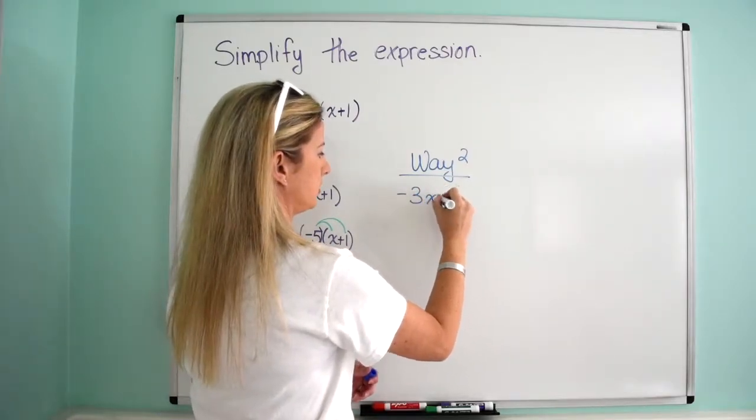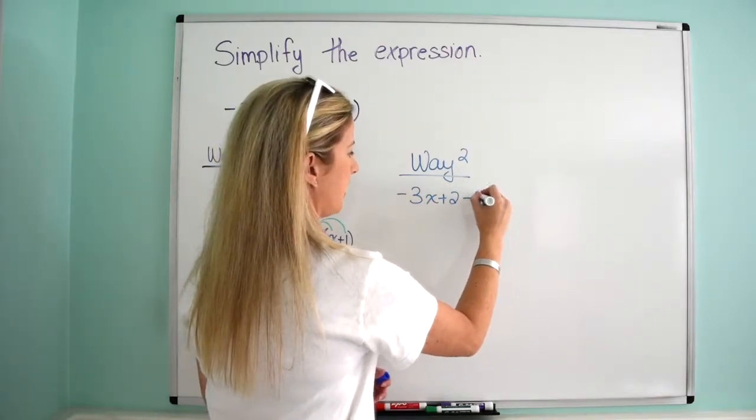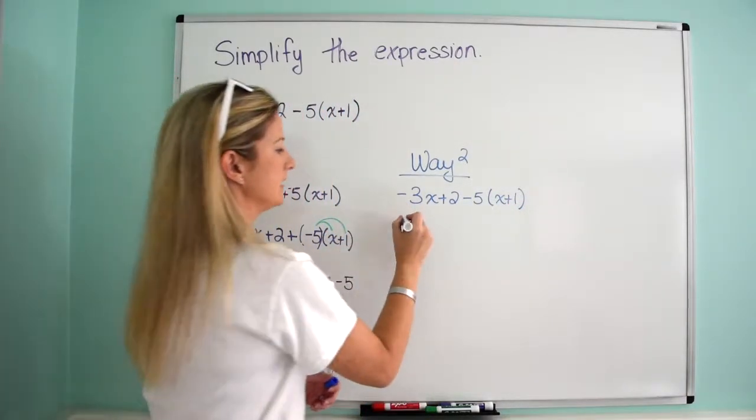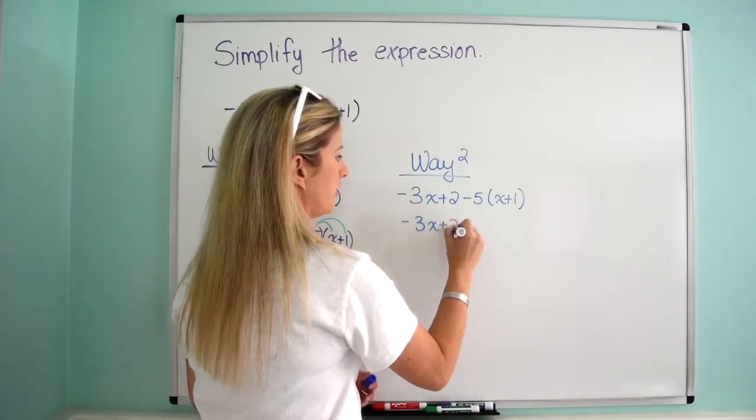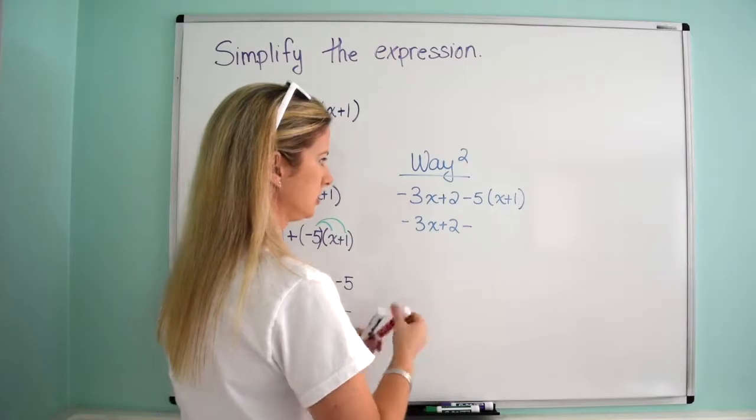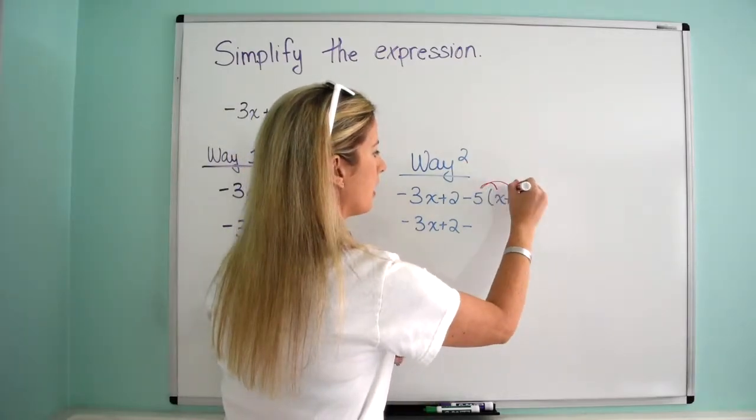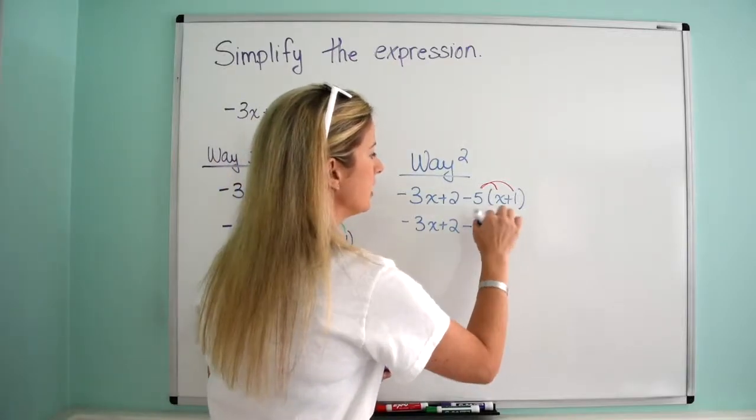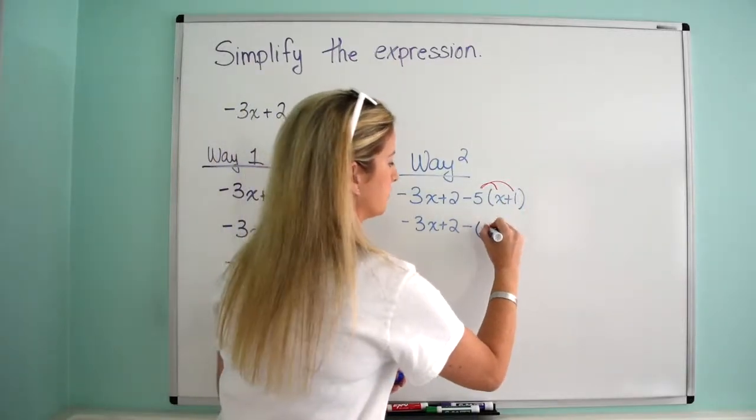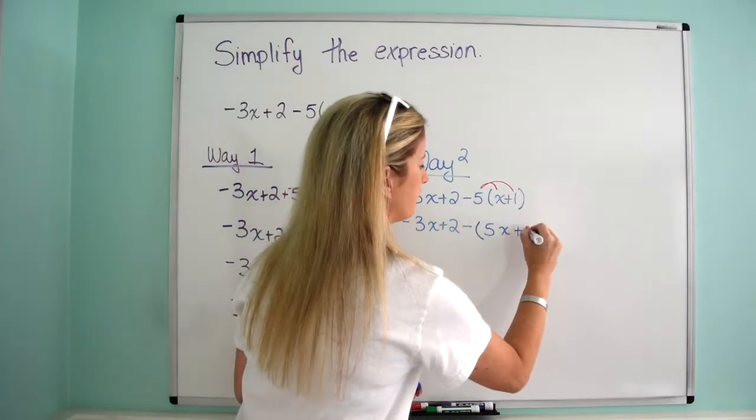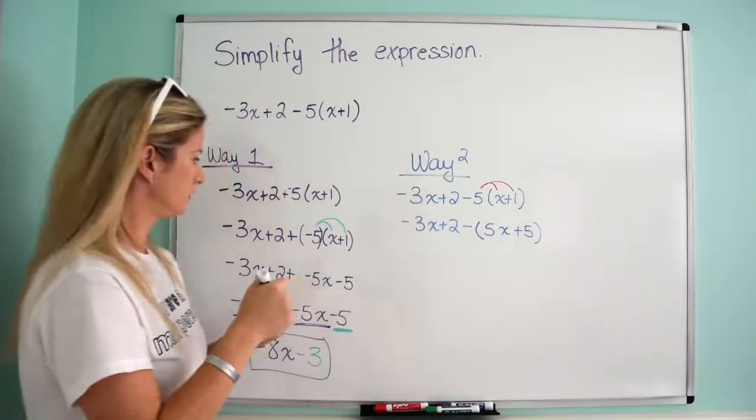So negative 3x plus 2 minus 5 times quantity x plus 1. So in this case, what I'm going to do is I'm going to leave the minus, and I'm going to distribute the 5 into the parentheses and then keep the parentheses. So then it becomes 5 times x, which is 5x, and 5 times 1, which is 5.